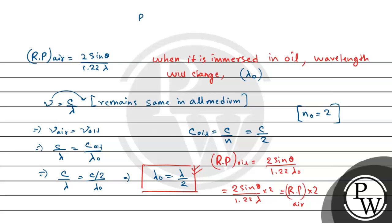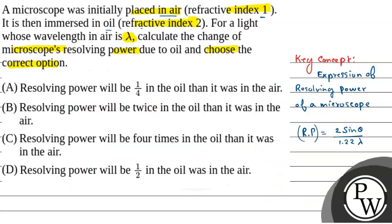That means the resolving power will be 2 times the resolving power in air. That is our relation. That means our option B, which is the resolving power will be twice in the oil than it was in the air, is the correct option. Hope you understand it. Best of luck.